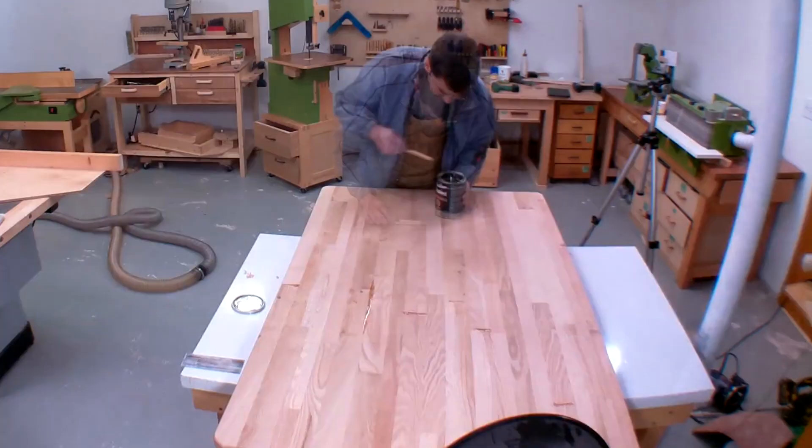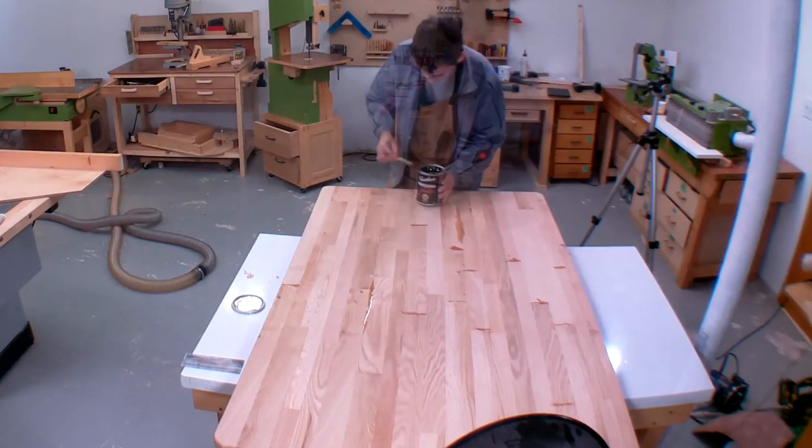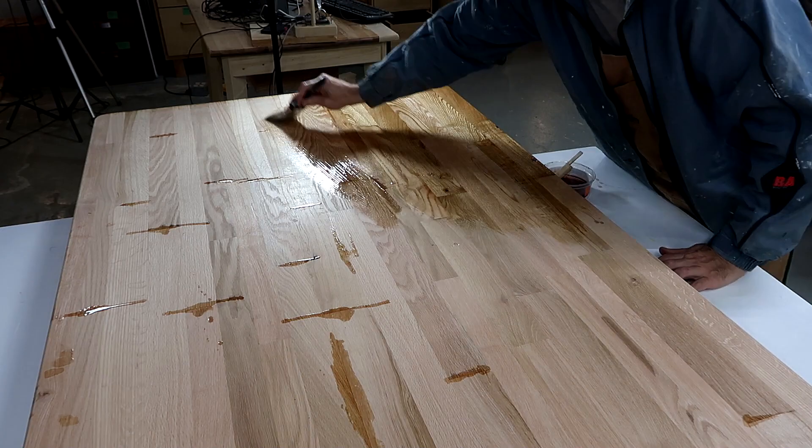I started by putting a few dabs of varnish on places where I had tiny gaps before applying it to the tabletop as a whole. The instructions say to put on thin coats, but I like to put it on really thick.